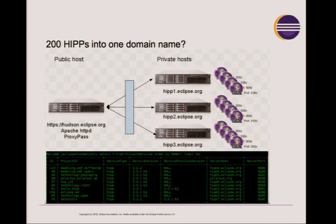To fit 200 of these Hudsons on a single domain name, we have a single machine that acts as Hudson.Eclipse.org, and the only thing that machine does is act as a proxy to all of the other 100 or 200 instances hidden behind it. Every Java process runs on its own TCP port. We try very hard to avoid port collisions, even though the processes are running on different servers. We could reuse ports, but we wanted a system where we could take one Hudson process and move it from one server to another, depending on server load or what the project needs.